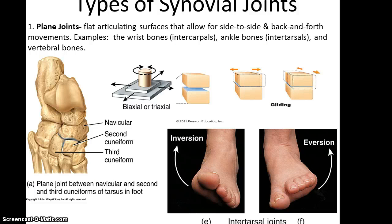Now let's talk about the different types of synovial joints, because we have lots of joints and they move in lots of different ways. Plane joints are basically two flat surfaces that are articulating, allowing for side-to-side and back-and-forth motion. The best examples are in the wrist bones between the carpals (intercarpal), or between the tarsals (intertarsal), and also the vertebral bones shifting with each other. These joints are often considered biaxial or triaxial. One kind of movement caused by plane joints is inversion and eversion of the foot.